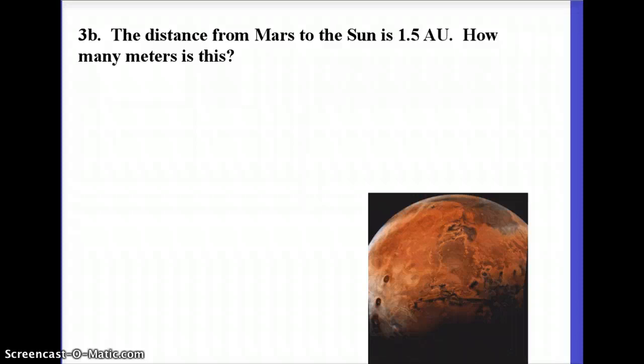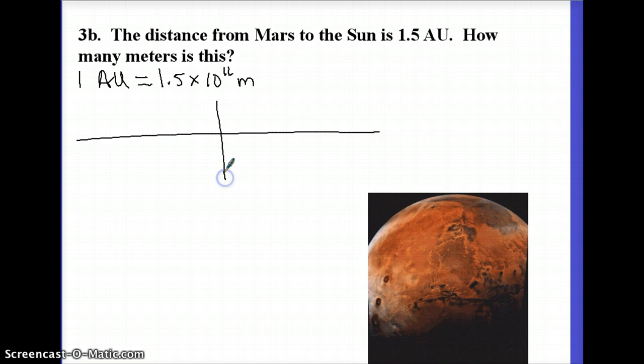In this one, we're going to deal with the distance from Mars to the Sun. We know the distance from Earth to the Sun is 1 AU. Mars is farther away—it's 1.5 AU. And I want to know how many meters that is. The first thing I need to know is the conversion between astronomical units and meters. From the last lecture, 1 AU is 1.5 times 10 to the 11 meters.